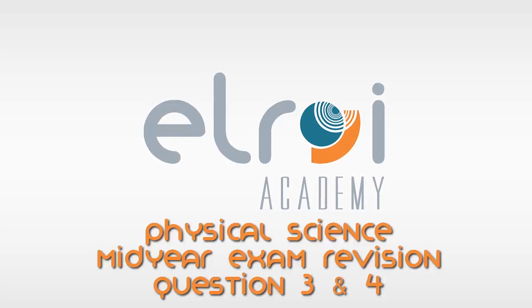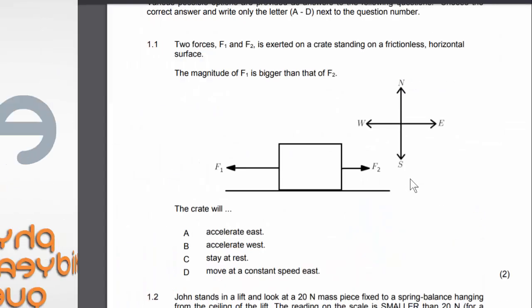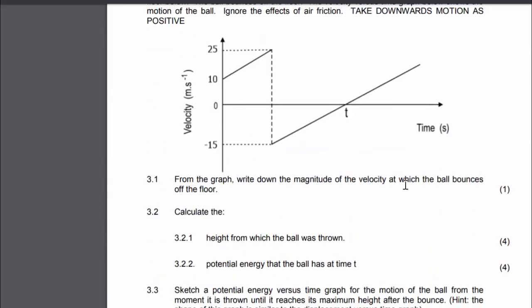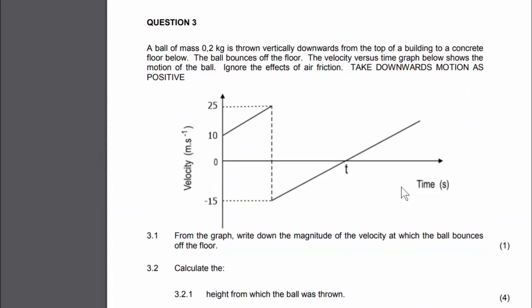Welcome to this revision lesson. We're going through question paper one and we've come to question three, which is our vertical projection question. Here we have a ball of mass 0.2 kilograms which is thrown vertically downwards from the top of a building to a concrete floor below. The ball bounces off the floor. The velocity versus time graph shown below shows the motion of the ball. Ignore air friction and take downward motion as positive.